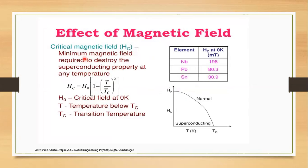Hc means the minimum magnetic field. The critical magnetic field means the minimum magnetic field required to destroy the superconducting property at any temperature. The superconducting property is destroyed.